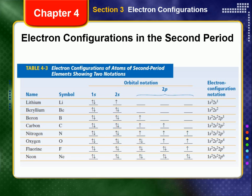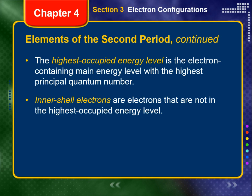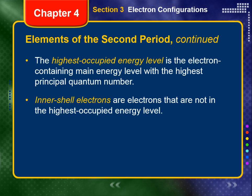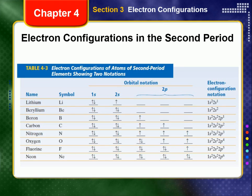The electron occupying the 2s level of a lithium atom is the atom's highest, or outermost, occupied level. The highest occupied level is the electron-containing main energy level with the highest principal quantum number. However, the two electrons in the 1s sublevel of lithium are no longer in the outermost energy level — they have become inner-shell electrons, which are electrons that are not in the highest occupied energy level. The fourth electron in an atom of beryllium, Be, must complete the pair in the 2s sublevel because this sublevel is of lower energy than the 2p sublevel.